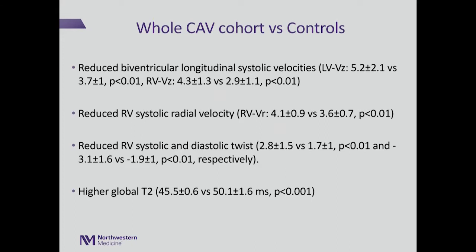When comparing velocities, T1, and T2 mapping between controls and the entire CAV cohort, patients with coronary allograft vasculopathy had reduced biventricular longitudinal systolic velocities in both the right and left ventricle. For the right ventricle specifically, RV systolic radial velocity and RV systolic end-diastolic twist were also reduced.